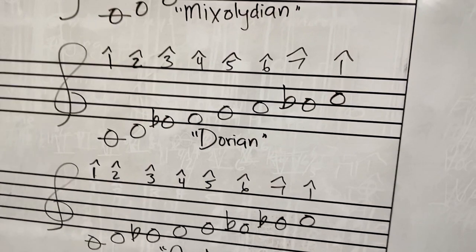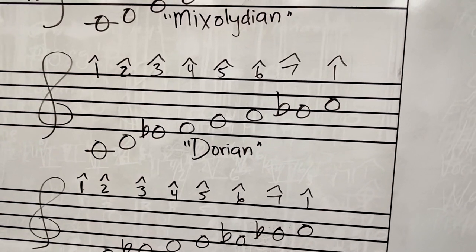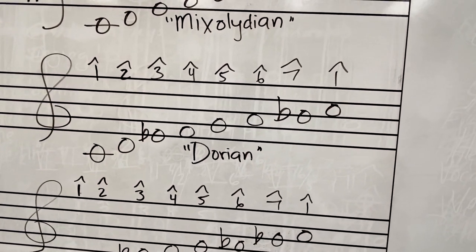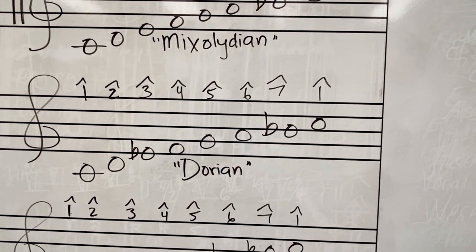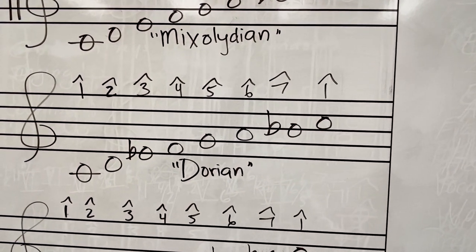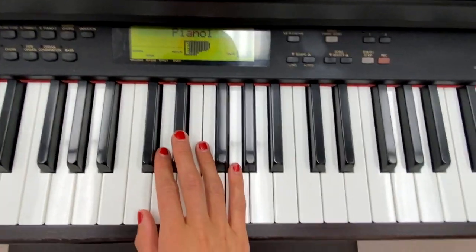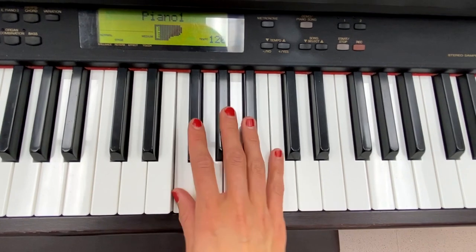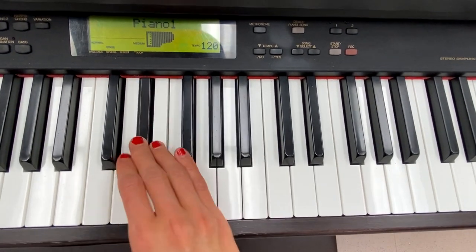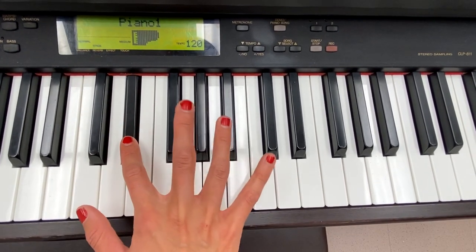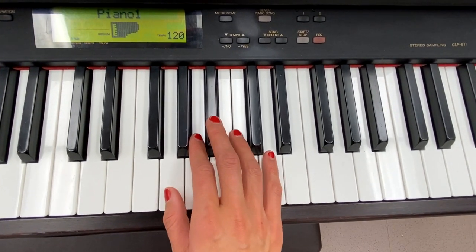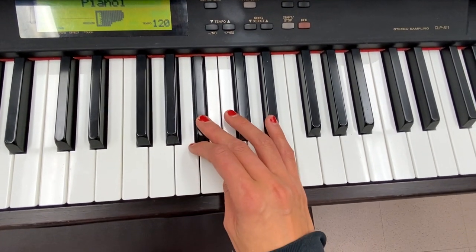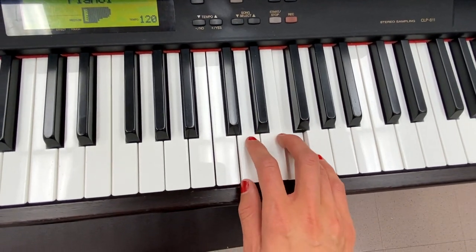The next mode is Dorian. We have a lowered third scale degree and a lowered seventh scale degree, so we're starting to become more introverted or more melancholic sounding. C Dorian sounds like this. If I wanted to do D Dorian, I would lower the third scale degree and the seventh scale degree.